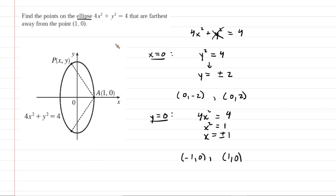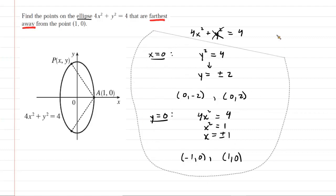The question implies there are at least two points on the ellipse that are furthest away. We can envision those points would be over here and over here, and it is our job to find the coordinates of those two points. To be farthest away means to have a maximum distance.